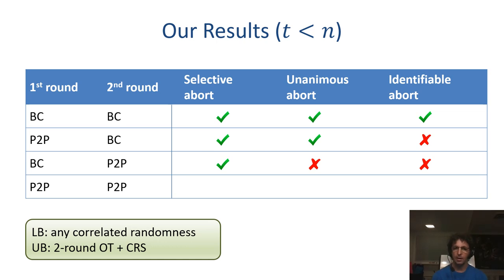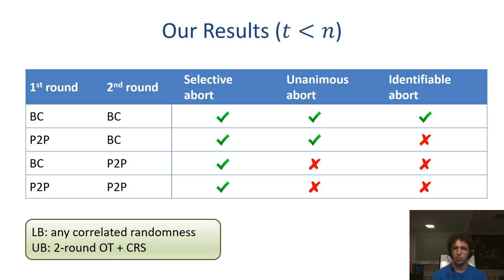Yet, every function can be computed with security with selective abort. In that sense, the first broadcast round doesn't add anything in terms of feasibility. Security with selective abort can be achieved without relying on any broadcast channel, and only communicating over pairwise point-to-point channels.